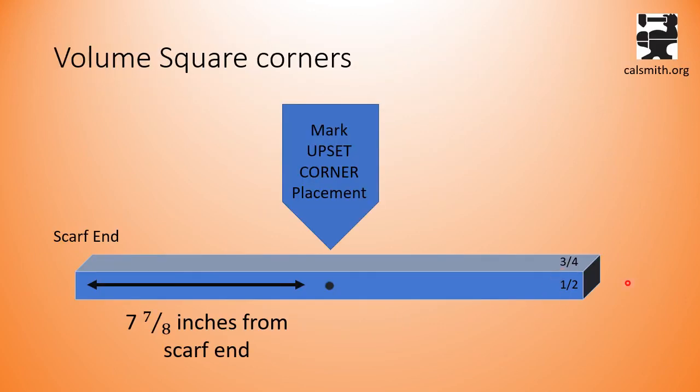So start with a long bar, at least twenty-two inches, and from the end that will become the scarf, measure seven and seven eighths of an inch and place your center punch mark on the one-half inch side. You are now ready to move on to the next series of videos that will go over forging the elements in this video.